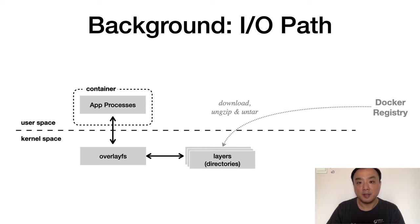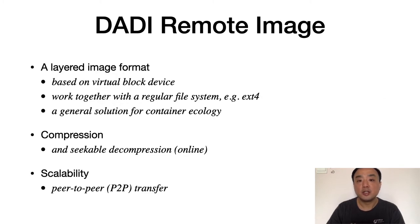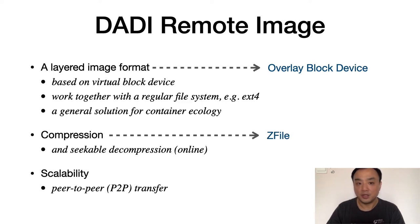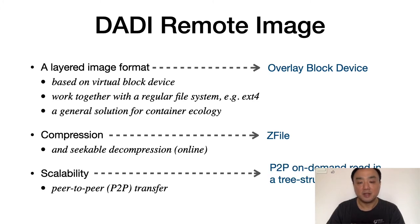This is the IO path of the image. The containerized application sends IO requests to overlayfs, which then redirects the requests to an appropriate layer. There are three core components in DADI. The first is a novel layered image format based on a virtual block device. Each layer in DADI is a change set of overwritten data blocks, and we create a merged view of the layers with a new module called overlay block device, or overlay bd for short. It is a general solution for container ecology. DADI image retains compression by introducing a module called Z-file, which supports seekable online decompression. This is the second core component. And the third one is a tree-structured P2P subsystem, providing on-demand transfer to cope with our large-scale production clusters.